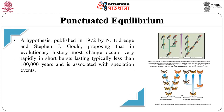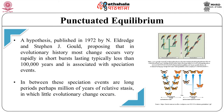Let's understand the concept of punctuated equilibrium. A hypothesis published in 1972 by N. Eldridge and Stephen J. Gould proposes that in evolutionary history, change occurs very rapidly in short bursts lasting typically less than one lakh years, and is associated with speciation events. In between these speciation events are long periods — perhaps millions of years — of relative stasis in which little evolutionary change occurs. This hypothesis contradicted the orthodox Darwinian view of evolution as a gradual and continuous process, prompting much controversy and debate.